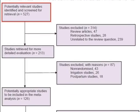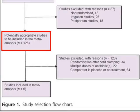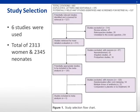From the 527 potentially relevant studies, 314 studies were excluded because they were either review articles, retrospective studies, or unrelated to the review question. Further screening excluded non-randomized studies, irrigation studies, and postpartum studies, leaving 126 citations. After further exclusion of studies with randomization after cord clamping, multiple antibiotic doses, or comparisons to placebo, six studies were included in this meta-analysis, involving a total of 2,313 women and 2,345 neonates.